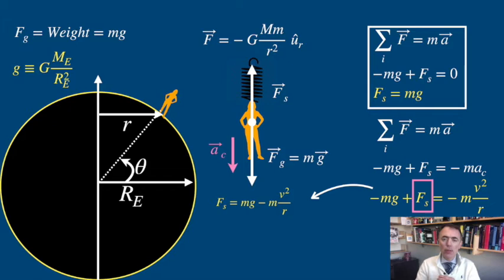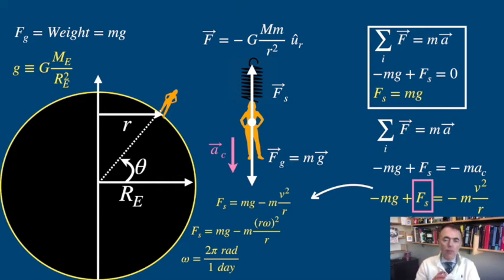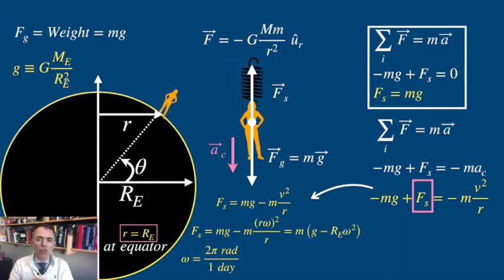Because of the circular motion, we can rewrite the tangential velocity as r times omega, where r is the radius of the trajectory and omega is the angular velocity — that is, how many radians you travel per second. This we can get knowing that it takes one day to complete one revolution, two pi radians. First, we assume for one moment that you travel to the equator of the Earth. The radius of your trajectory is the radius of the Earth, and we can write your apparent weight as m times g minus radius of the Earth times omega squared.